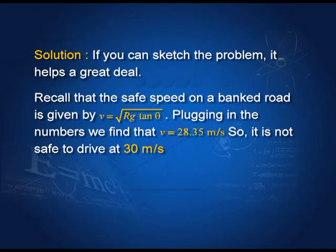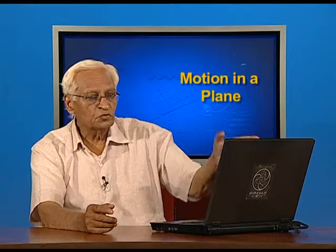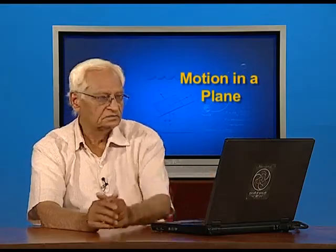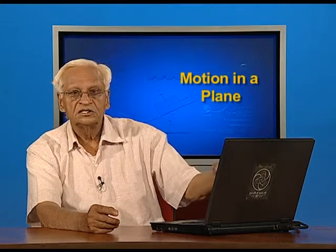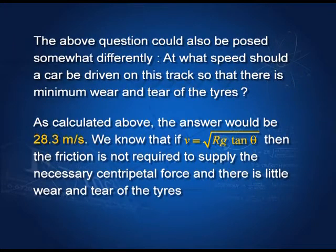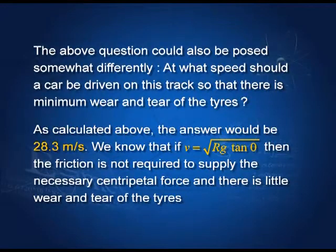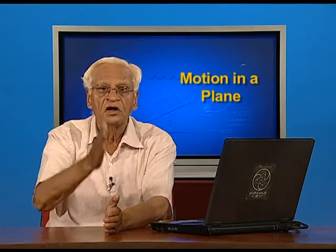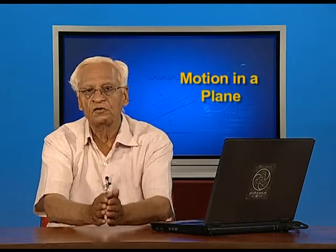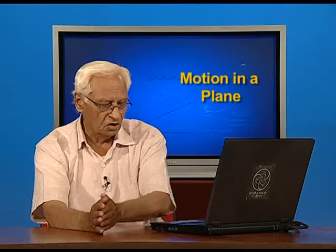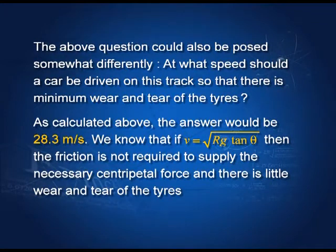So driving at 30 meters per second on this road is not safe. The same question could be posed differently: at what speed should a car be driven so that there is minimum wear and tear of the tires? The speed should be v = √(rg tanθ), which is 28.3 meters per second. If you drive at 28.3 m/s, you increase the life of the tires, you are safe, and you save money on tires.